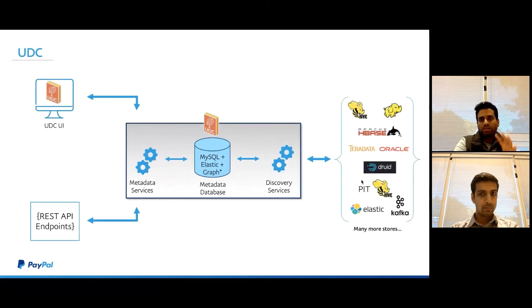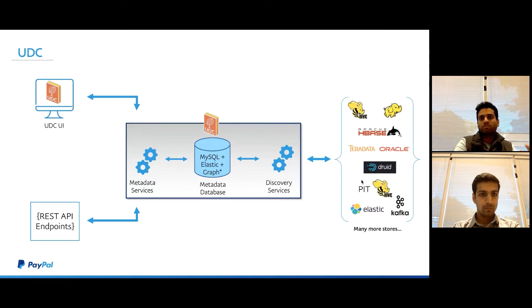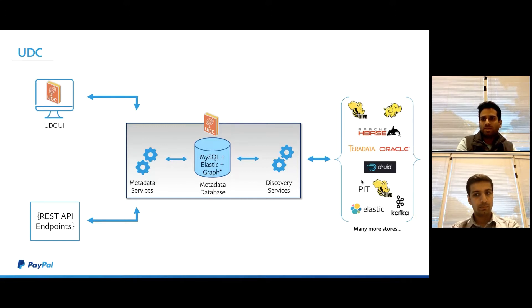At a very high level, UDC is basically a meta store which has all the different stores that we scan within PayPal. Think of the Google search analogy: Google crawls different websites, indexes them, and applies a page-ranking algorithm so when you search you get sorted results. You can apply the same analogy for data assets in an enterprise. We have discovery services that crawl all the different stores, UDC indexes the metadata, applies sorting and ranking algorithms, and the user comes to the portal and self-services their needs.